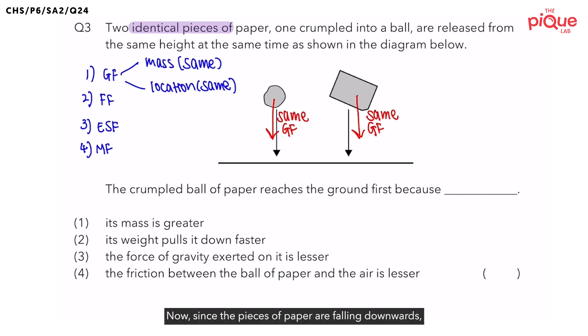Now, since the pieces of paper are falling downwards, they are moving. Whenever an object is moving, we say that there is frictional force acting on it. Since these pieces of paper are moving downwards through air, there is frictional force between the papers and the air. And this force is called air resistance. And air resistance is acting upwards.